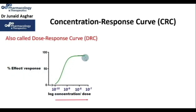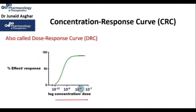The concentrations or doses are typically on a logarithmic scale. This means the units on the x-axis increase by a power of 10, allowing us to compare a very wide range of doses on a single graph.